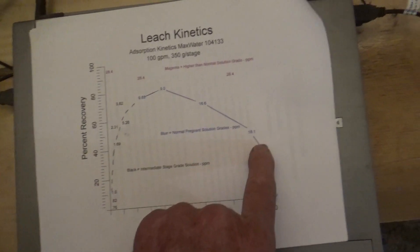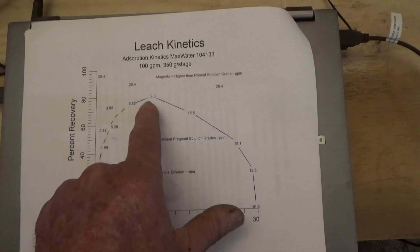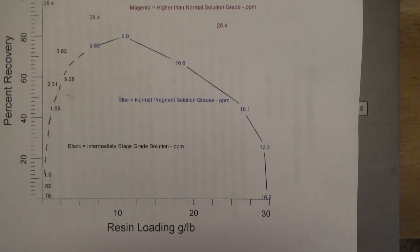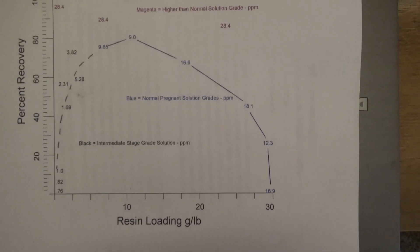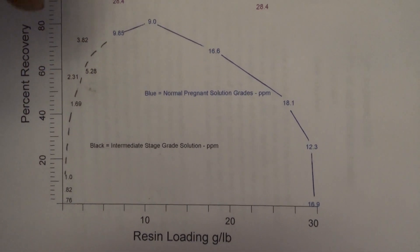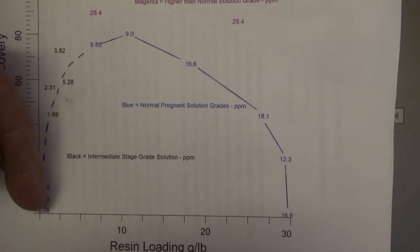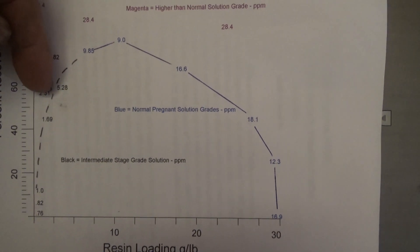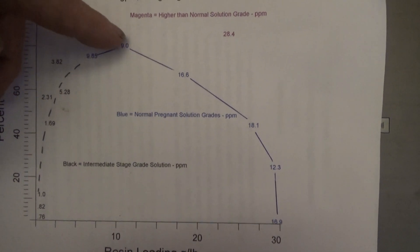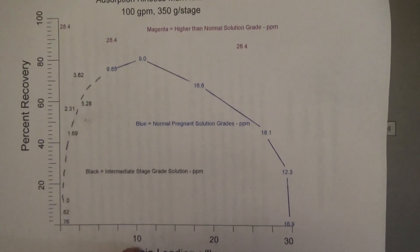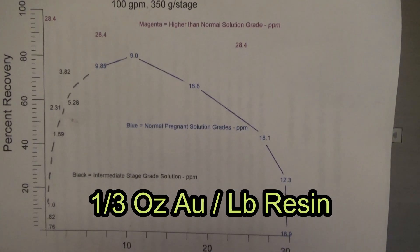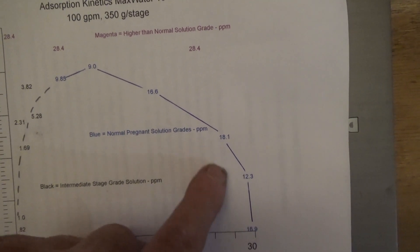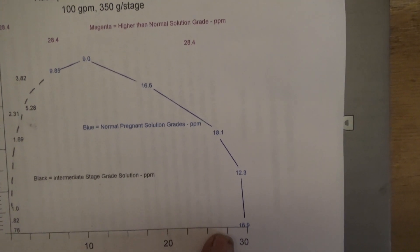As you come up in concentration it rapidly gains the ability to extract a decent percentage from solution. The concentrations on this blue line are what we would consider normal leaching solution concentration — this is what we expect to get in our mill. Even at low loading factors, very little recovery until your concentration in solution is getting around three or four parts per million. Then you're starting to get good percentage recoveries, and it peaks out at a loading factor of about 10 grams per pound.